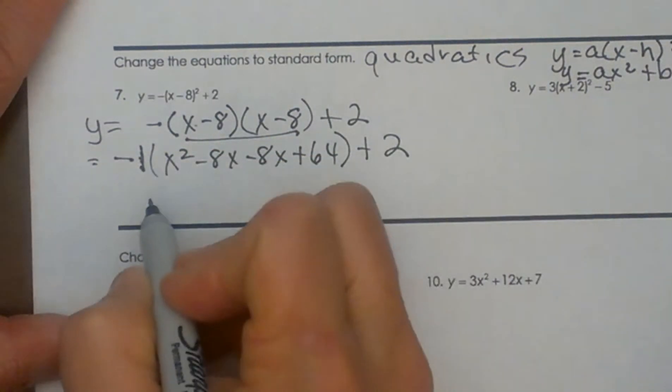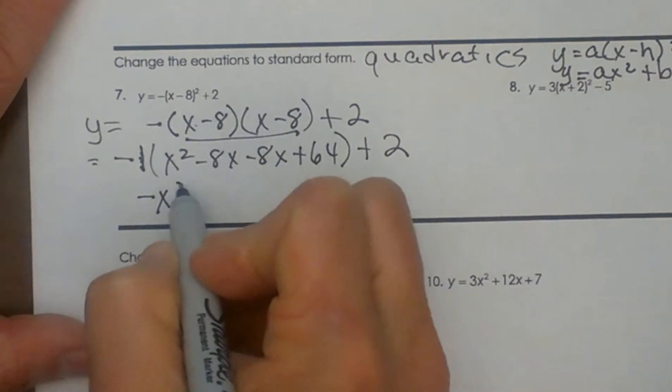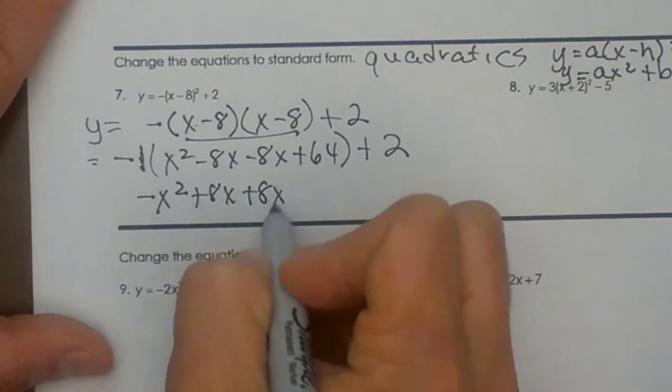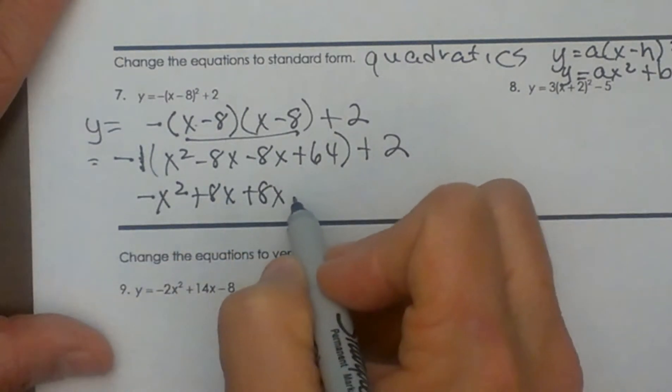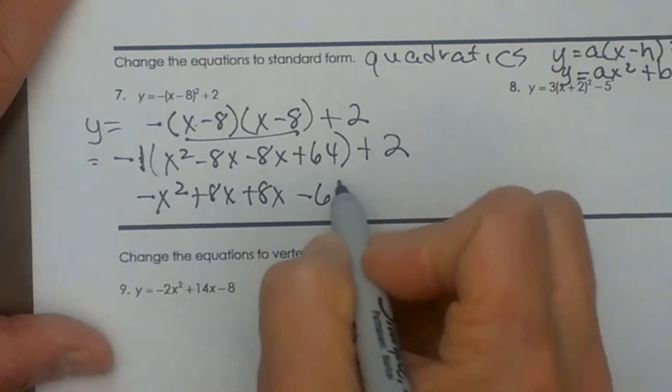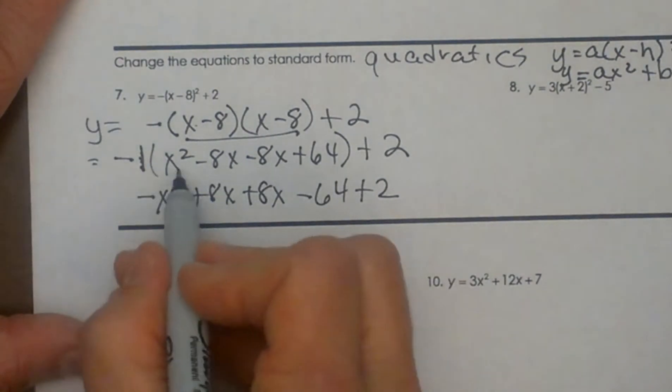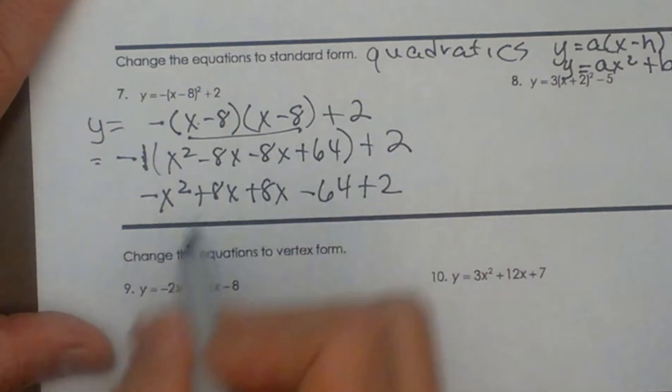Now let's distribute that negative in. So I'm going to have -x² + 8x + 8x (I could have combined that to 16 first if I desired), and then -64. I'm distributing a negative in, which changes all the signs.